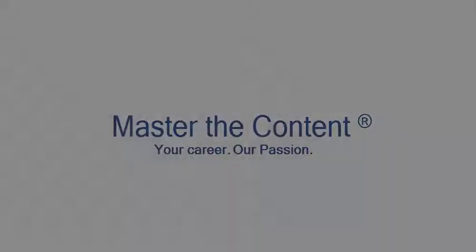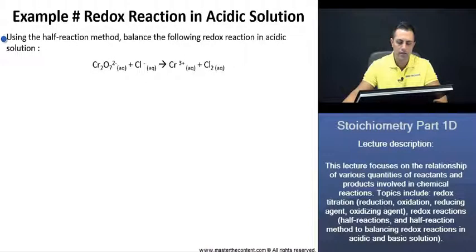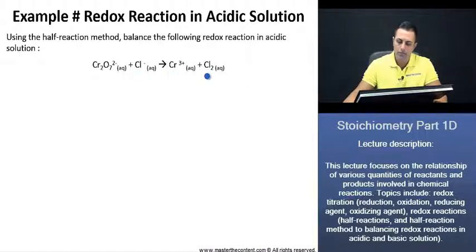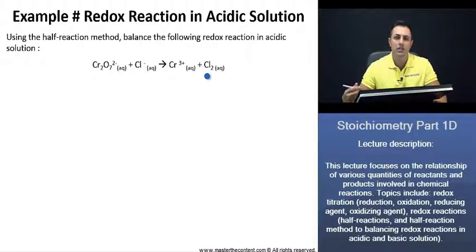Your career, our passion. Using the half-reaction method, balance the following redox reaction in acidic solution. Here we have dichromate and chlorine ions as reactants to give us chromium and chlorine. Let's go back to our slide and see what we need to do first.